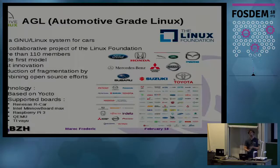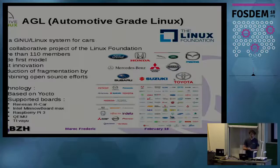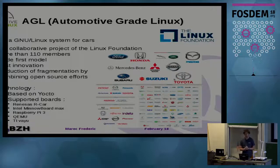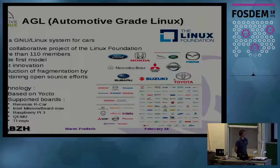So what is AGL? Automotive Grade Linux is a new Linux system for cars. It's the first collaborative project of the Linux Foundation with more than 110 members, mostly big car builders.